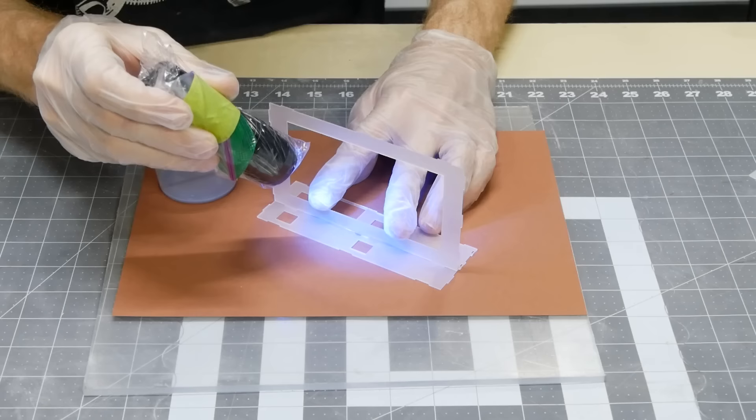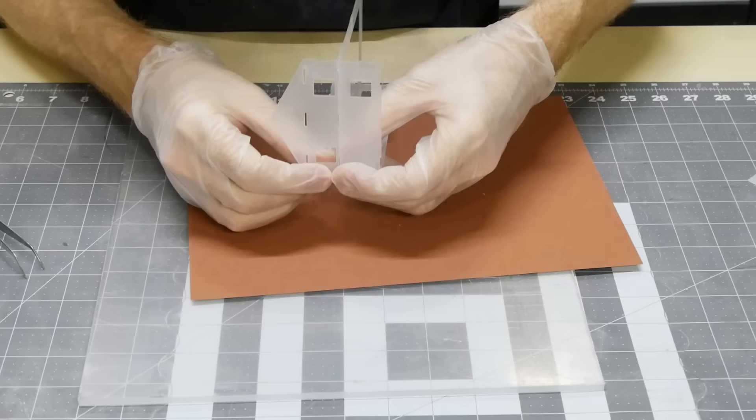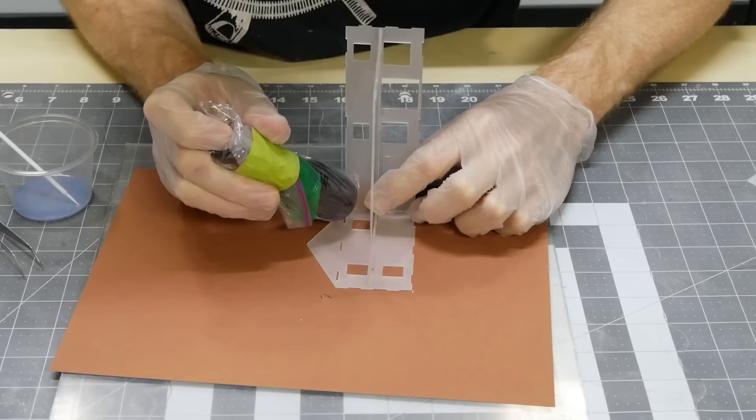And it was even better because resin goes on wet, then you can take your time getting the part just right in terms of position and angle, then when you're ready hit it with the UV light for about a second and it's set in position and won't move on you.